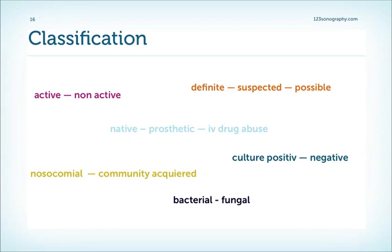There are several ways of classifying endocarditis: either as definite, suspected, or possible depending on how sure you are; active or non-active depending on the degree of infection; native, prosthetic, or in IV drug abusers depending on what is affected; culture positive or negative; nosocomial or community acquired; and finally bacterial or fungal.